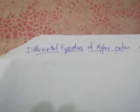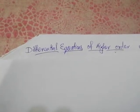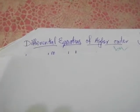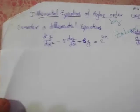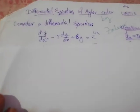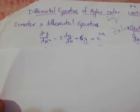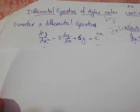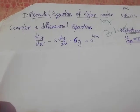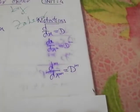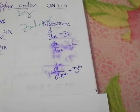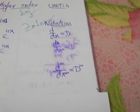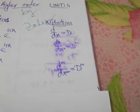This lecture is about differential equations of higher order. For example, we have a differential equation of the type: d²y/dx² minus 5 times dy/dx plus 6y is equal to e raised to the power 4x. We are going to utilize operator notation: dy/dx is denoted by capital D, d²y/dx² by capital D², and in general dⁿy/dxⁿ by capital Dⁿ.